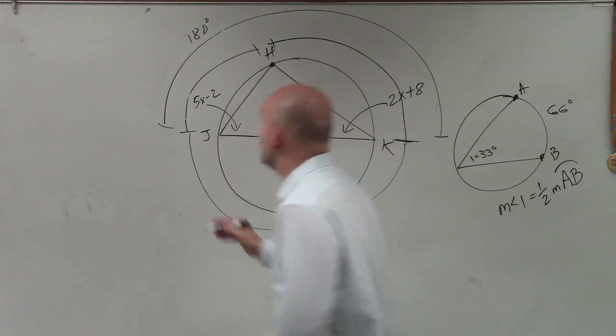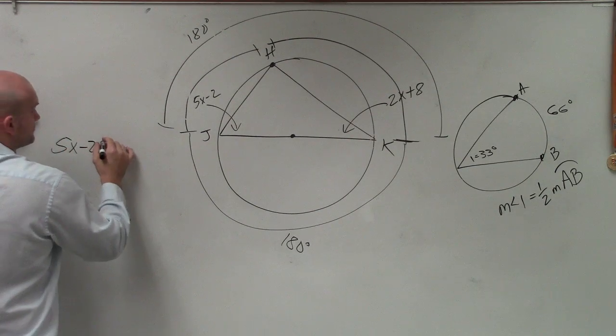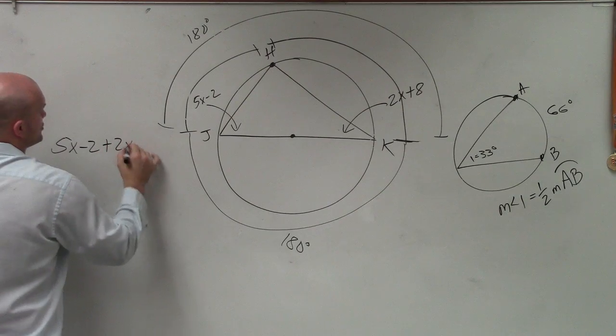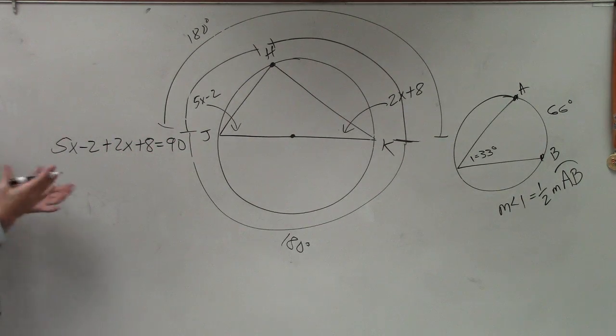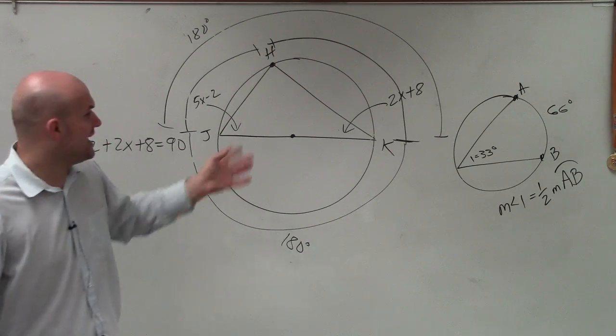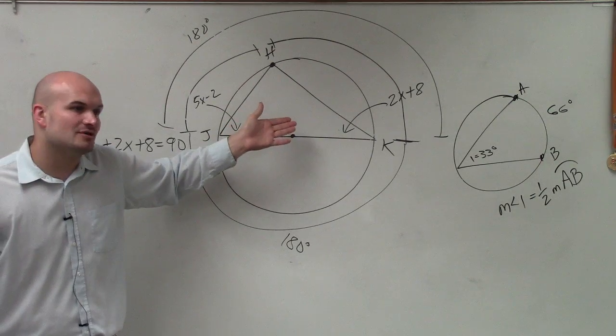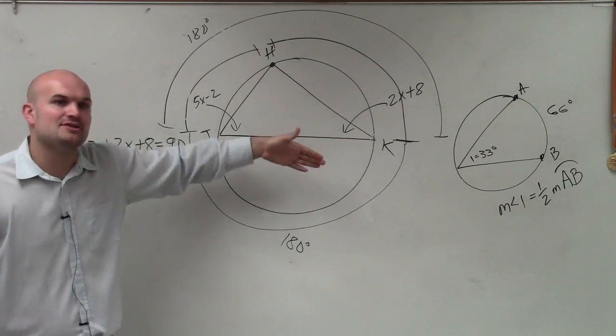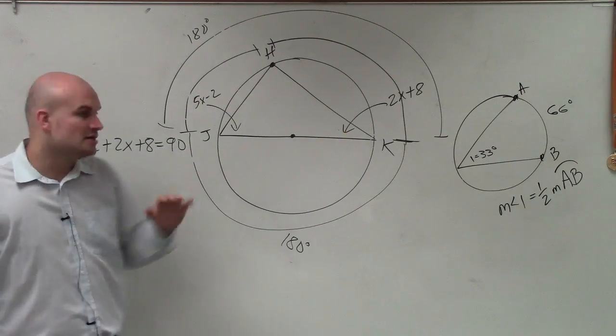So the equation I'm going to write, which I'll write over here, is 5x minus 2 plus 2x plus 8 equals 90 degrees. They don't add up to 180. They add up to 90. Because if they were central angles, they would add up to 180. Since they're not central angles, they're inscribed angles, they add up to half of our arc measure. So that's 90.